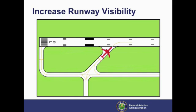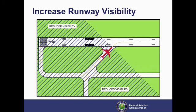Right angle intersections, both between taxiways and between taxiways and runways, provide pilots with the best visibility to the left and right. Taxiways that intersect at sharp angles make it more difficult for a pilot to see airplanes on approach or on the runway. As seen here, a pilot of a plane entering a runway at a 45-degree angle has reduced or no visibility to the section of runway behind the plane. For this reason, avoid using acute angle runway exits as runway entrances or crossing points.